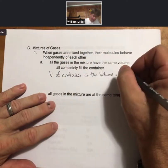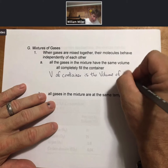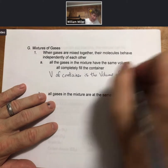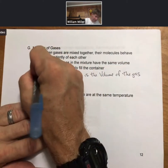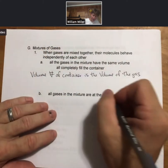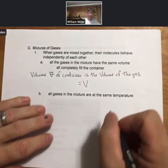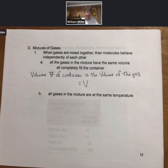So volume of container is the volume of the gas. And that's just going to equal V in PV equals nRT. So volumes are all the same.